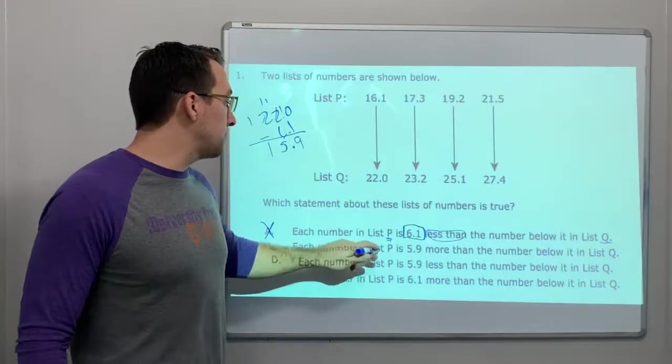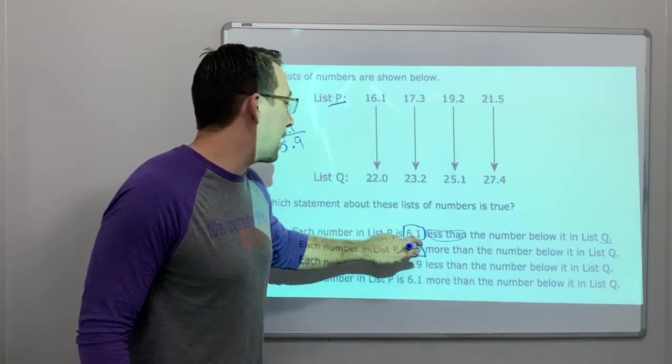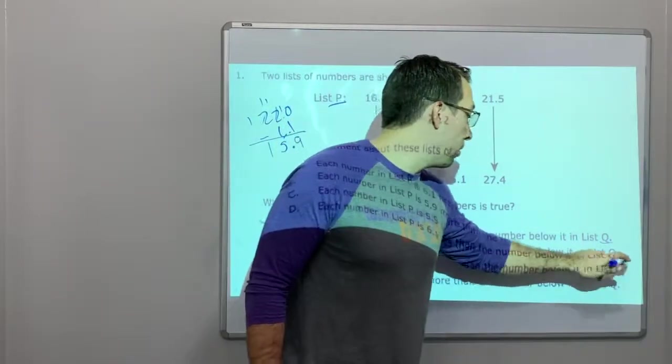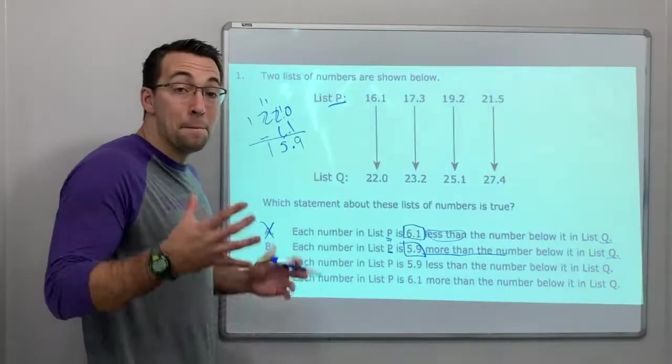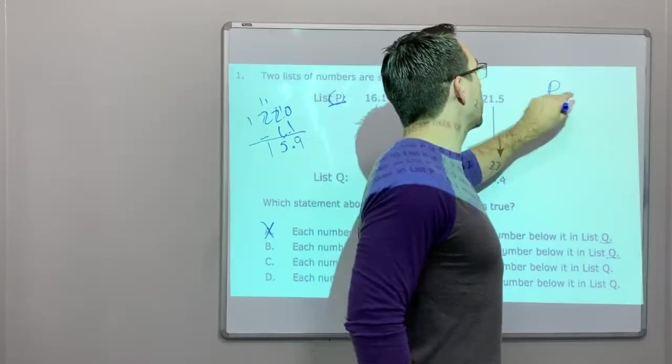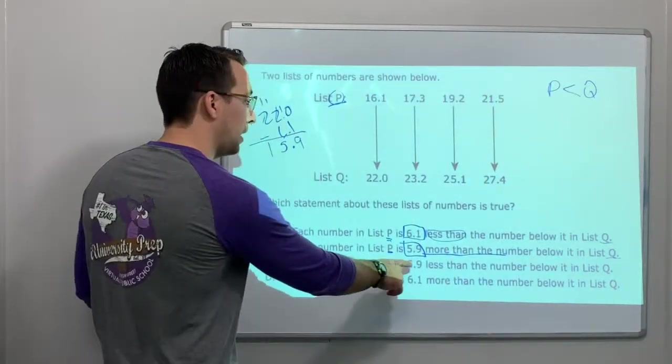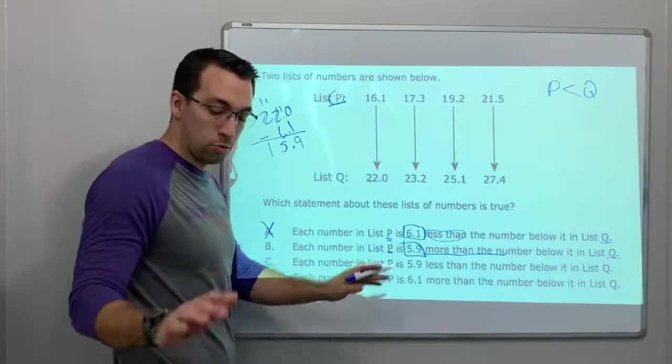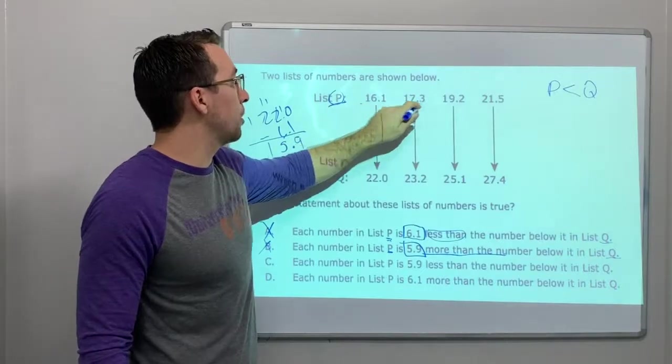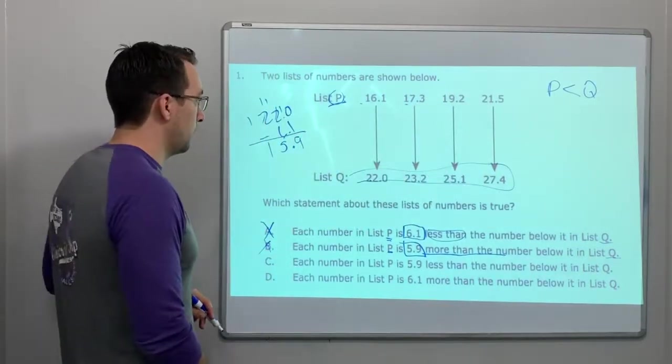Each number in list P, so here's list P, is 5.9 more than the number in list Q. Whoa. Is P bigger than Q? P is, so just for your notes, look, P is less than Q. And this is saying P is greater than Q. That's wrong. B is wrong. See? This is smaller, smaller, smaller, smaller than list Q.